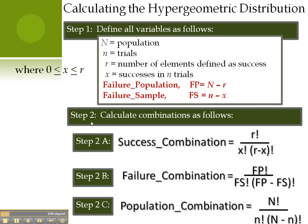In step two, we actually calculate our combinations. There's one combination for success, one for failure, and one for the population.